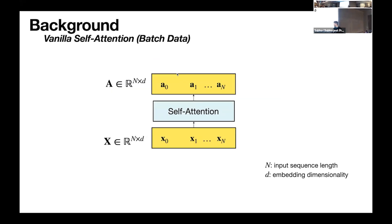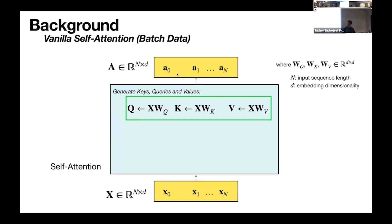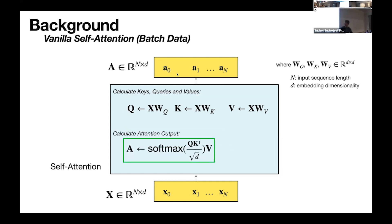The idea behind self-attention is that the input is a batch of vectors, denoted X of size n × d, where n is the sequence length and d is the embedding dimensionality. The output is also a matrix of the same size, called A. Inside the self-attention layer, we generate keys, queries, and values. The entire batch is used — not processing things one at a time — and a softmax operation captures the relationship of every element with every other element in the batch.